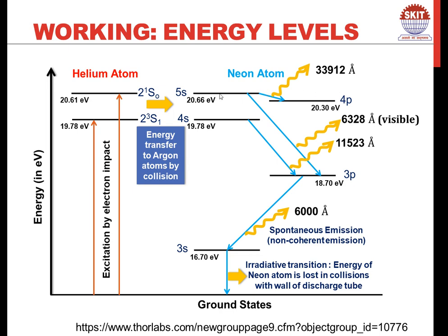The 5s to 3p transition happens from a metastable state, so the photons are coherent and can produce laser. There is another transition from 4s to 3p which originates a photon of wavelength 11523 Å — again an IR wavelength, not visible. So we obtain a visible photon of 6328 Å. The transition from 3p to 3s is also possible, but 3p is not a metastable state — there would be rapid spontaneous emission which is non-coherent, and therefore laser action cannot be obtained at that wavelength.